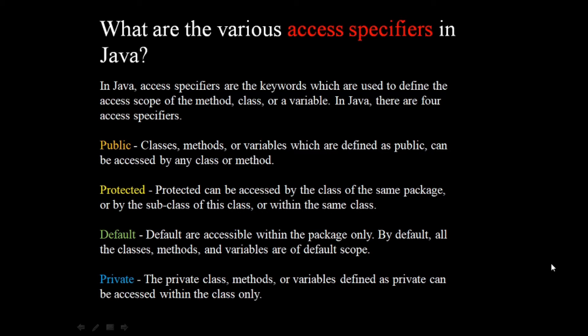In public, classes, methods, or variables which are defined as public can be accessed by any class or method. If we define a class, method, or variable as public, then that variable, class, or method can be accessed by any of the other classes or methods.